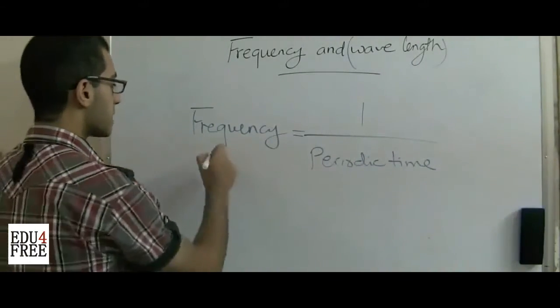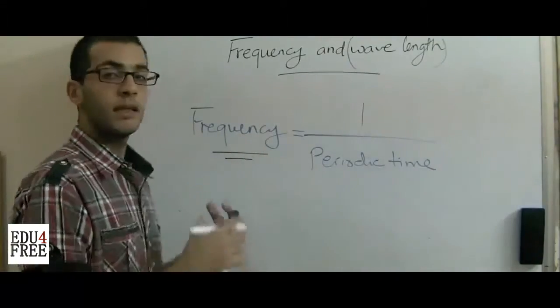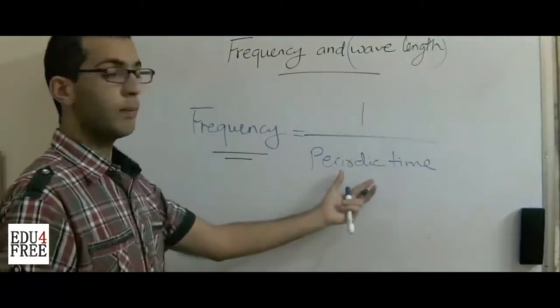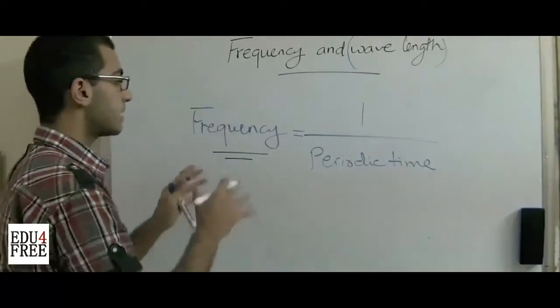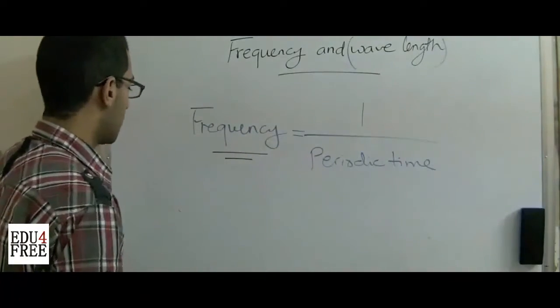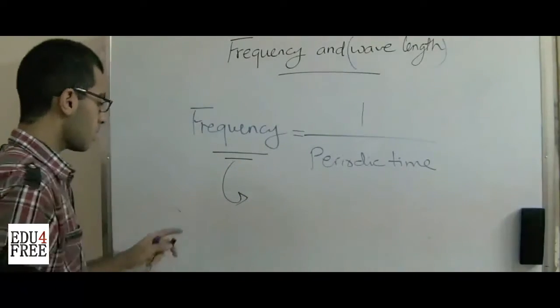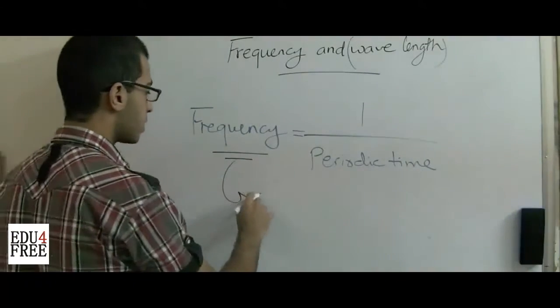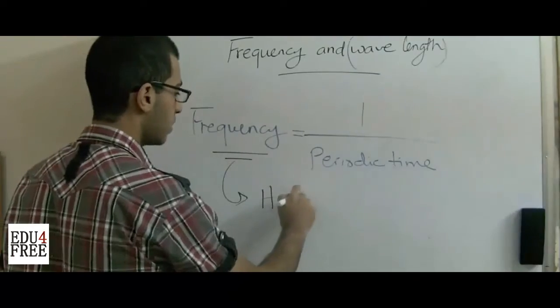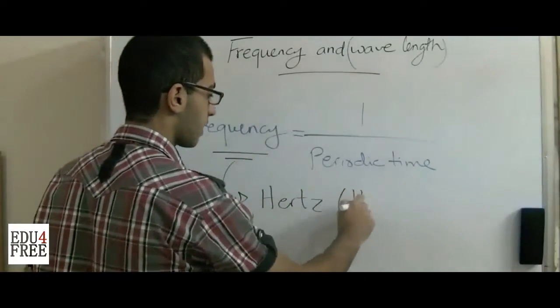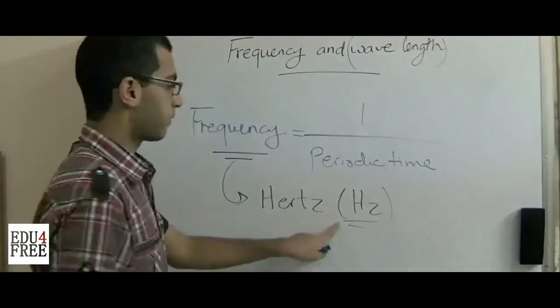So the frequency is the number of complete oscillations that the wave makes in one minute. The frequency, we refer to as Hertz, its unit is Hertz. It's Hz for short.